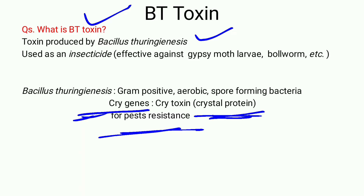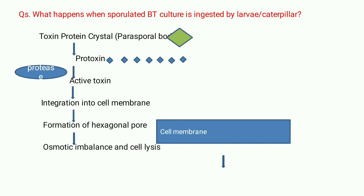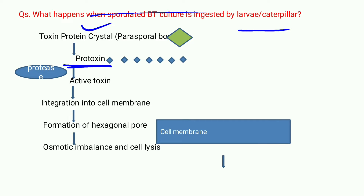That is the introduction. Moving to the mechanism: as soon as the parasporal body is ingested into the gut of the caterpillar, it is present in the inactive form as the protoxin. Due to the action of the protease enzyme, it gets converted into the active toxin.